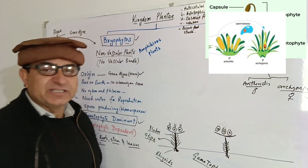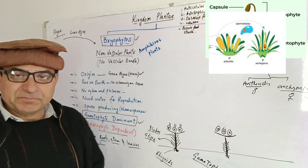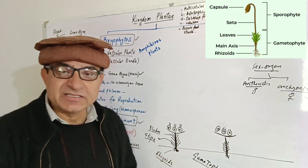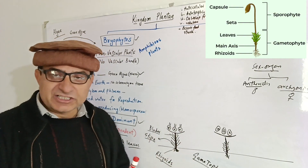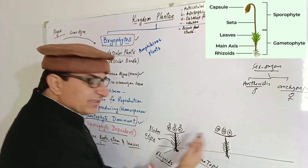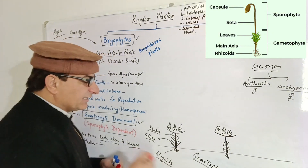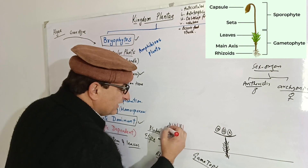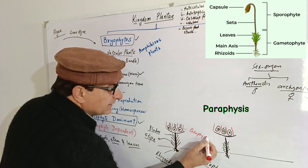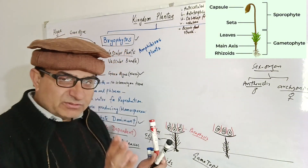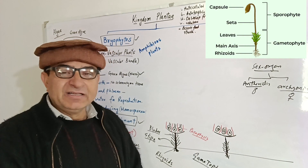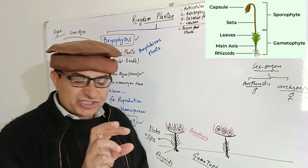Antheridia are male sex organs and archegonia are female sex organs. They may be present on the same plant on different branches, or on different plants. A plant may have both antheridia and archegonia, or they may be on separate plants. These sex organs are found in clusters, and these clusters are provided with sterile hairs called paraphysis, which protect them from dehydration.